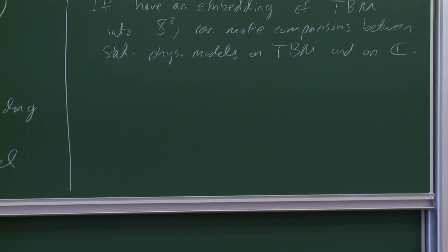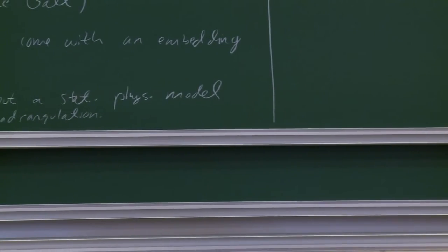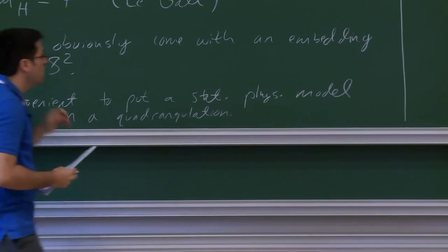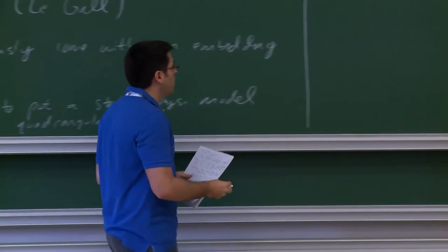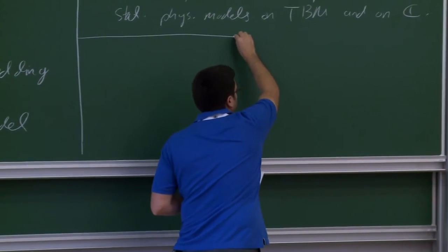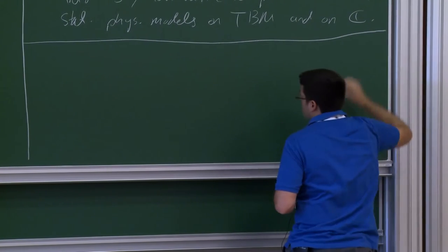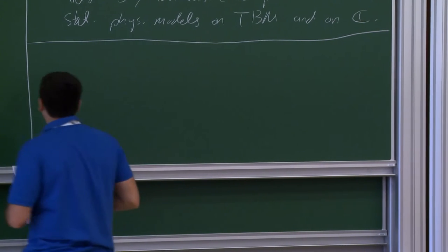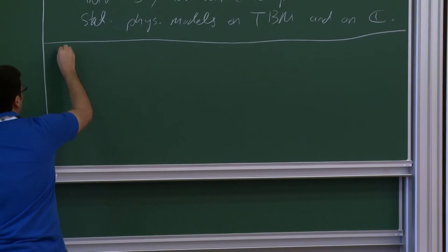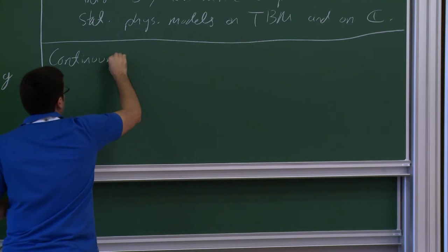So this is one motivation for wanting to understand embeddings of scaling limits of random planar maps. This is the discrete side of the story. Now let me give a high-level introduction to the second approach, which is a purely continuum theory of random surfaces.